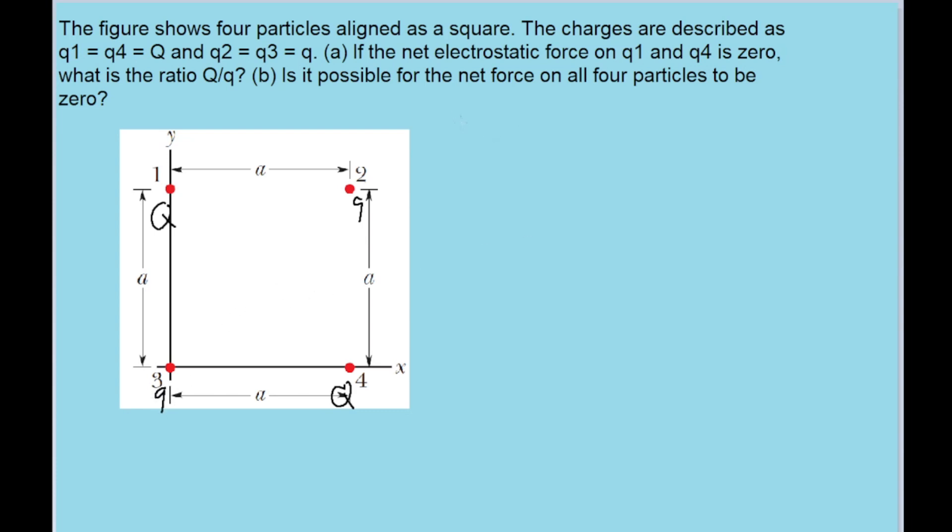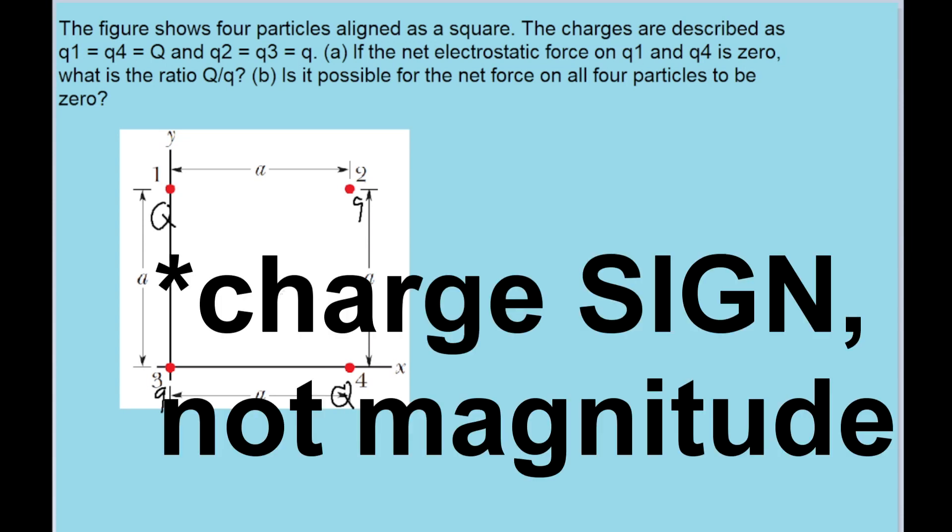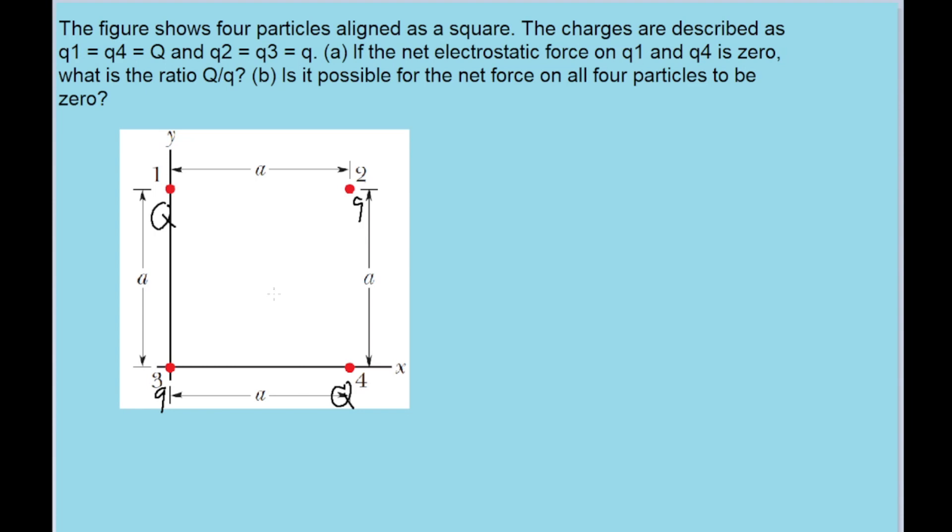We're looking for the ratio of big Q's charge to little q's charge, but that is only in the case that the net force on charges one and four are equal, which tells us something important right off the bat. The ratio we're looking for in part A has to be negative, and the reason why we know that is because if big Q and little Q had the same charge magnitude then it would be impossible for any of these particles to have a net force of zero.